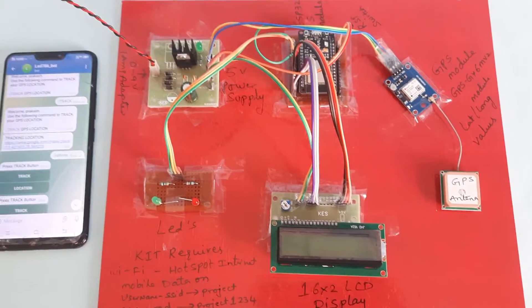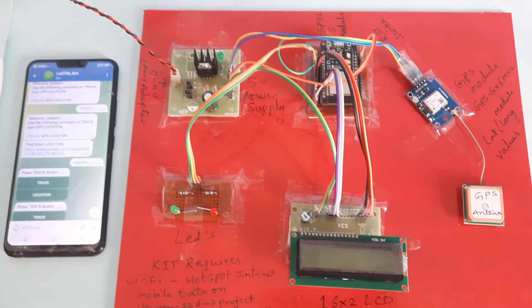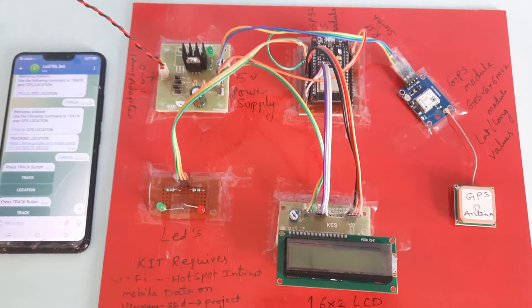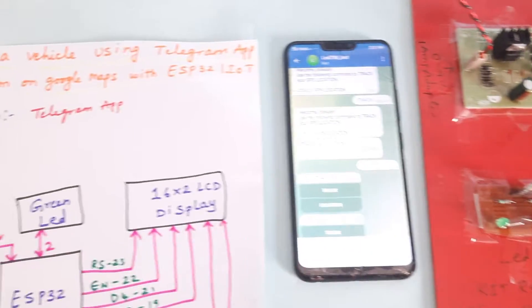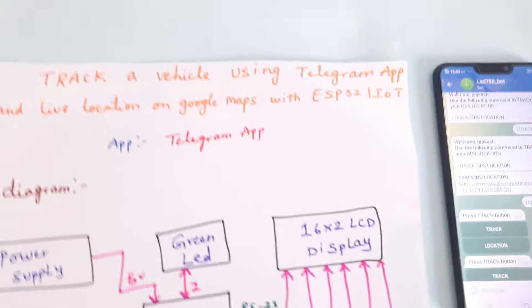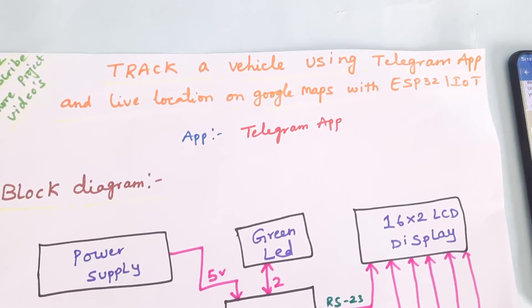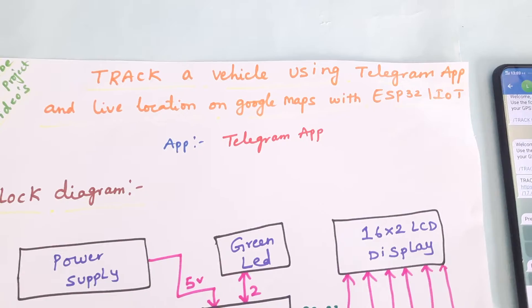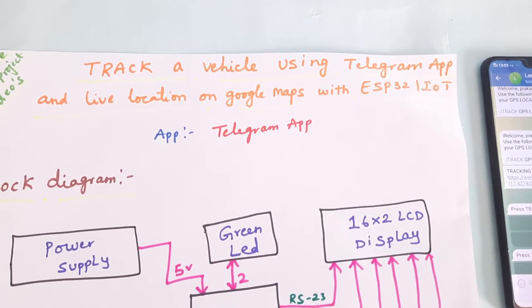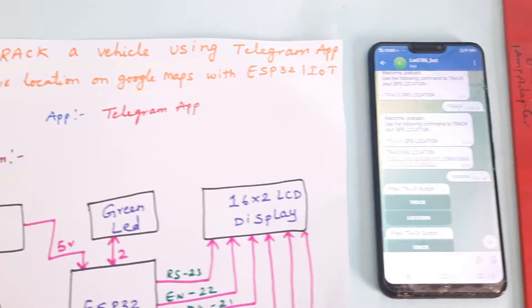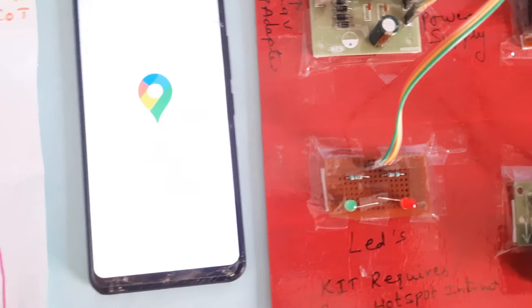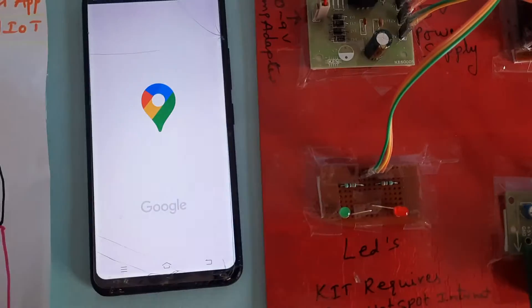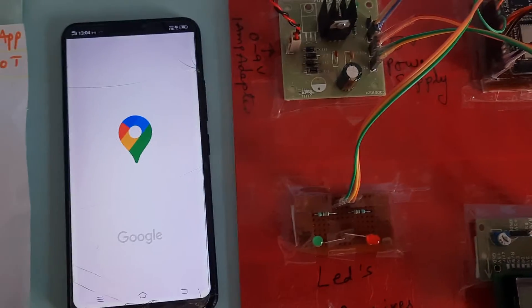Hi, we are from SVS Embedded. The project title is 'Track a Vehicle Using Telegram App and Live Location on Google Maps with ESP32.' We are going to track the vehicle.